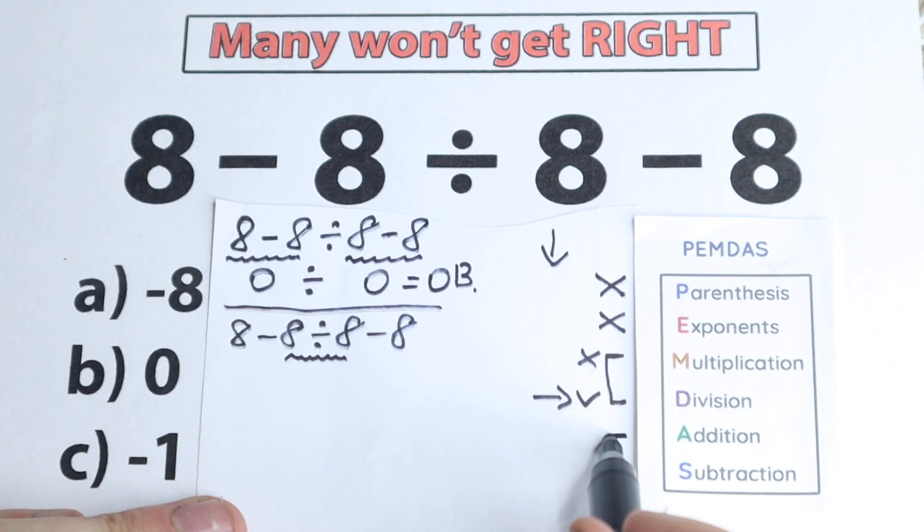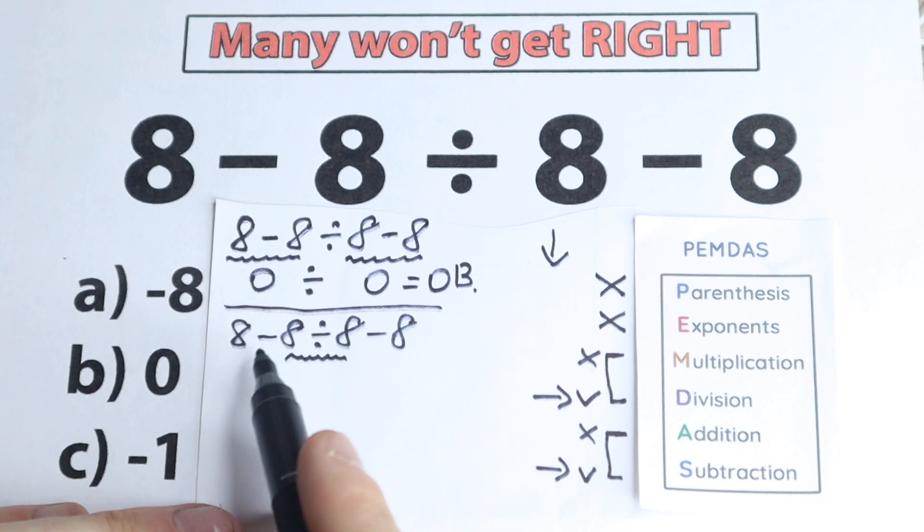And moreover, if you look at addition and subtraction group, so we have subtraction and we don't have addition. So as you can see, we have only two steps in this PEMDAS order of operation. We have subtraction, we have division. But what we should do at first? We need to divide or subtract.